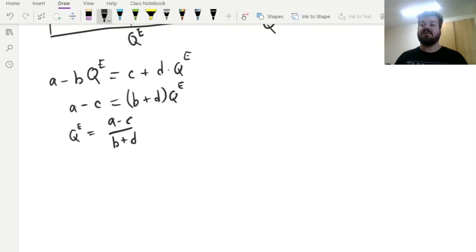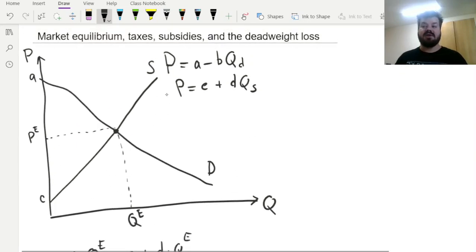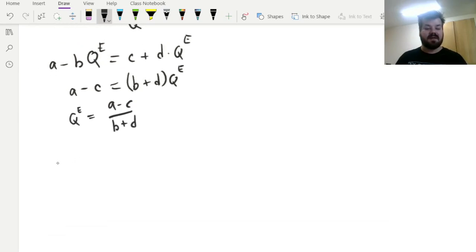Now we have to find the equilibrium price, and that can be achieved in two different ways that are equivalent. We can either put the equilibrium quantity we have just derived into the demand function or into the supply function, and both should give us exactly the same answers. Let's plug our equilibrium quantity into the demand function over here, and get that the equilibrium price is equal to A minus B times the equilibrium quantity. And here we express our equilibrium quantity in terms of the constants that describe the market, so B times A minus C over B plus D.